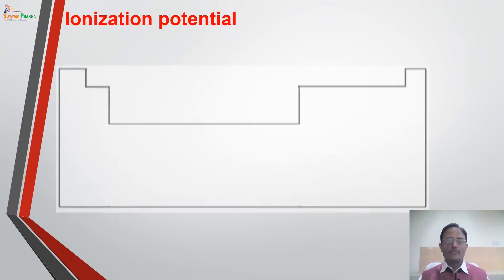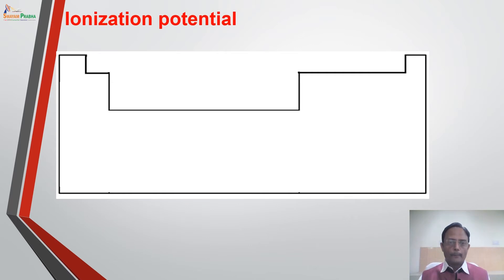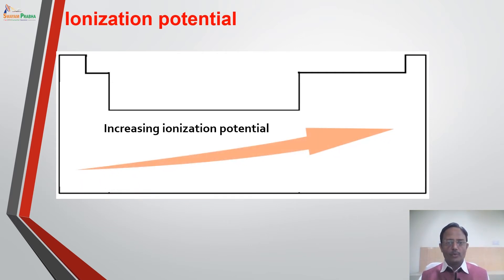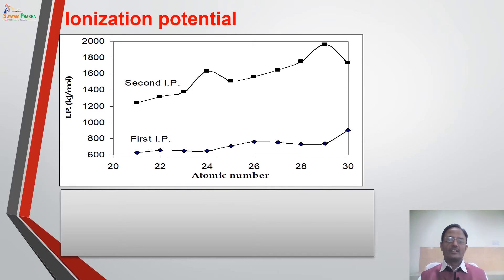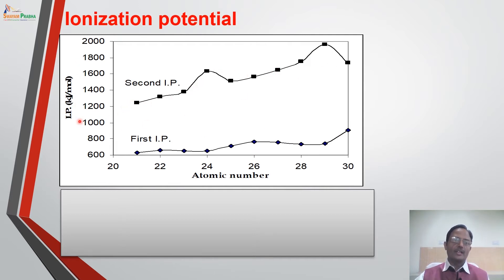In the periodic table, when we move from left to right, since the nuclear charge is continuously increasing and atomic radius is decreasing, the ionization potential goes on increasing from left to right across any period in general. In the case of 3D series elements, we have both first ionization potential values and second ionization potential values presented in kJ per mole from scandium to zinc, atomic number 21 to atomic number 30.